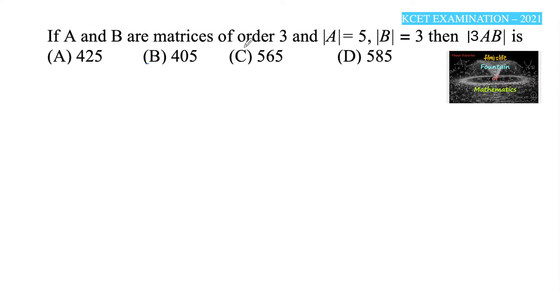If A and B are matrices of order 3 and the determinant of A is equal to 5 and the determinant of B is equal to 3, both matrices A and B are of order 3, that is 3 by 3 matrices.